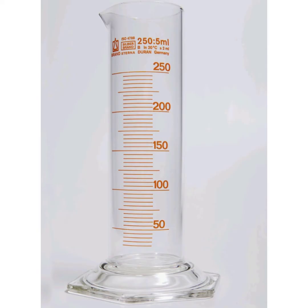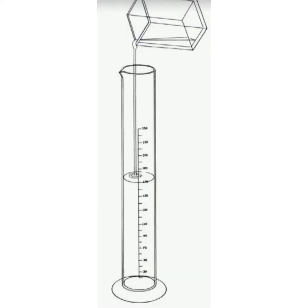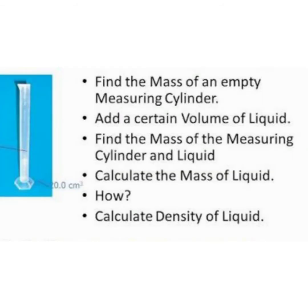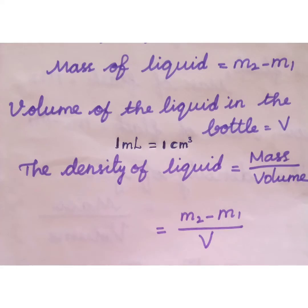To measure the density of a liquid using a graduated cylinder: first take the graduated cylinder and find its mass, denoted as M1. Fill the cylinder with the liquid and measure the volume, denoted as V. Then measure the mass of the cylinder again after filling with liquid, denoted as M2. The mass of the liquid will be M2 minus M1, and the volume of the liquid is V.